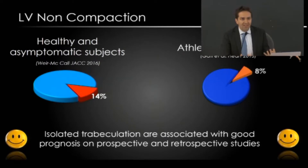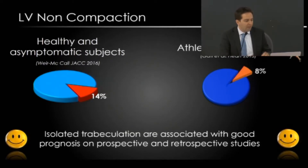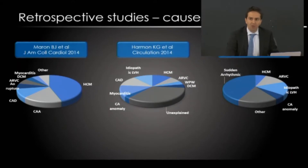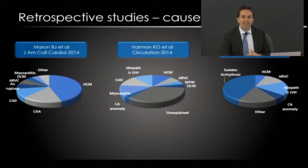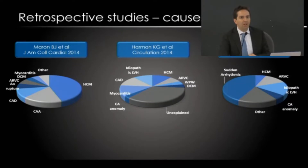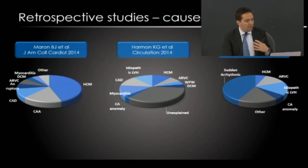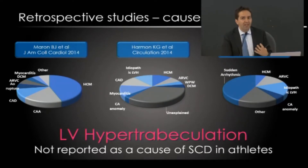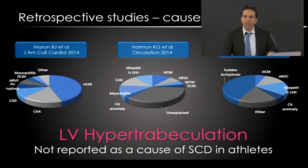There is increasing evidence that increased trabeculation is associated with good prognosis, demonstrated in both prospective and retrospective studies. Looking at epidemiological studies of sudden cardiac death causes in young athletes and young individuals, the most important causes include hypertrophic cardiomyopathy, arrhythmogenic cardiomyopathy, dilated cardiomyopathy, channelopathies, and coronary artery anomalies. But if we look carefully at the most recently published studies, LV hyper-trabeculation is not reported as a cause of sudden cardiac death in young individuals — and this is a very important, positive message.